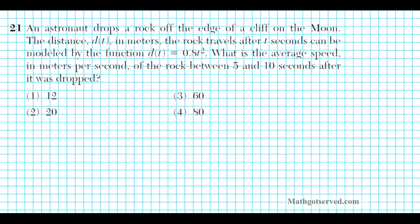Let's take a look at problem 21. It reads: an astronaut drops a rock off the edge of a cliff on the moon. The distance d of t in meters the rock travels after t seconds can be modeled by the function d of t equals 0.8t squared. What is the average speed in meters per second of the rock between 5 and 10 seconds after it was dropped?